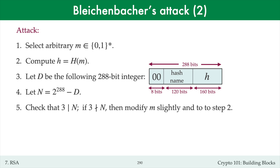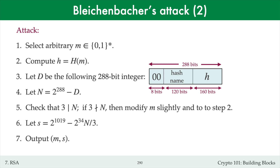After about 3 iterations, she expects that N will be divisible by 3. Finally, she defines the integer s to be 2^1019 minus 2^34 times N divided by 3. Note that s is indeed an integer, since 3 divides N. And that's it — the adversary outputs m as her forgery on Alice's signature. Observe that the attack requires very little computation. Essentially, the only work required is to compute the hash of the message, perhaps around 3 times. So this is a very fast attack, and justifies the title: Breaking RSA Signatures by Hand.